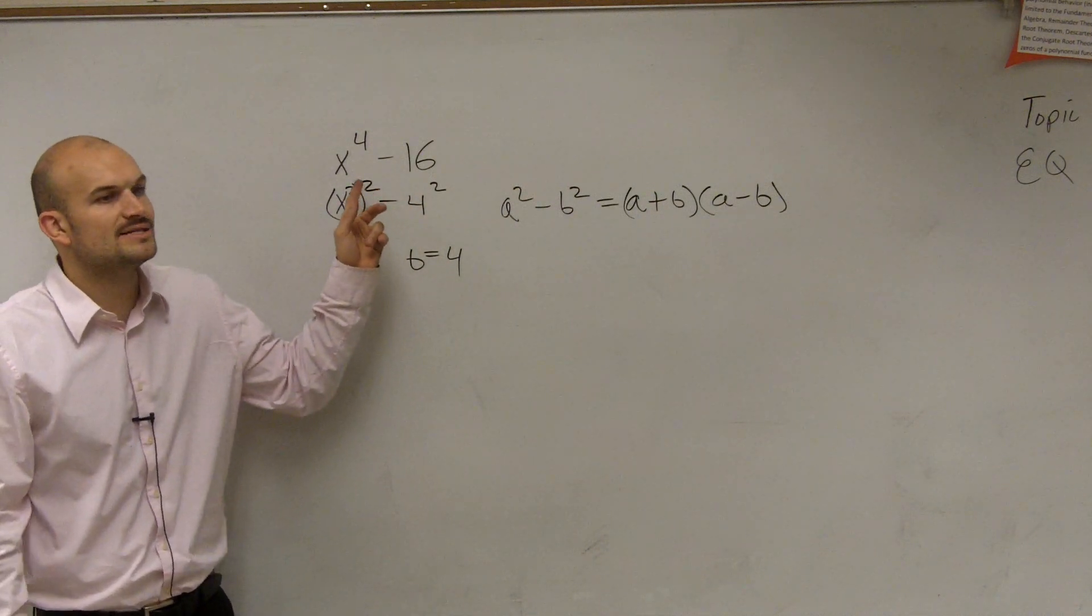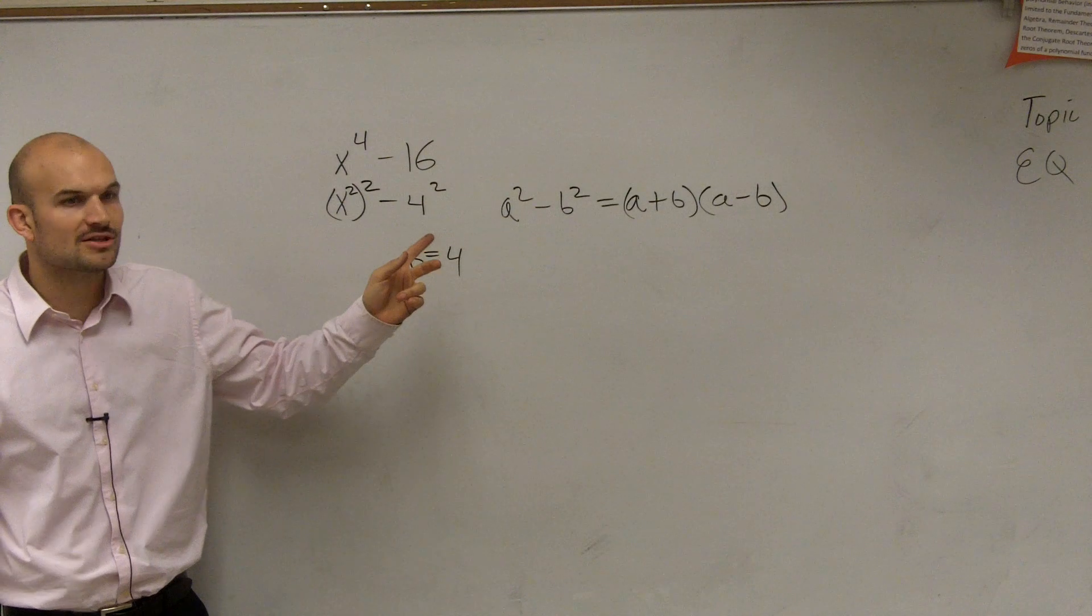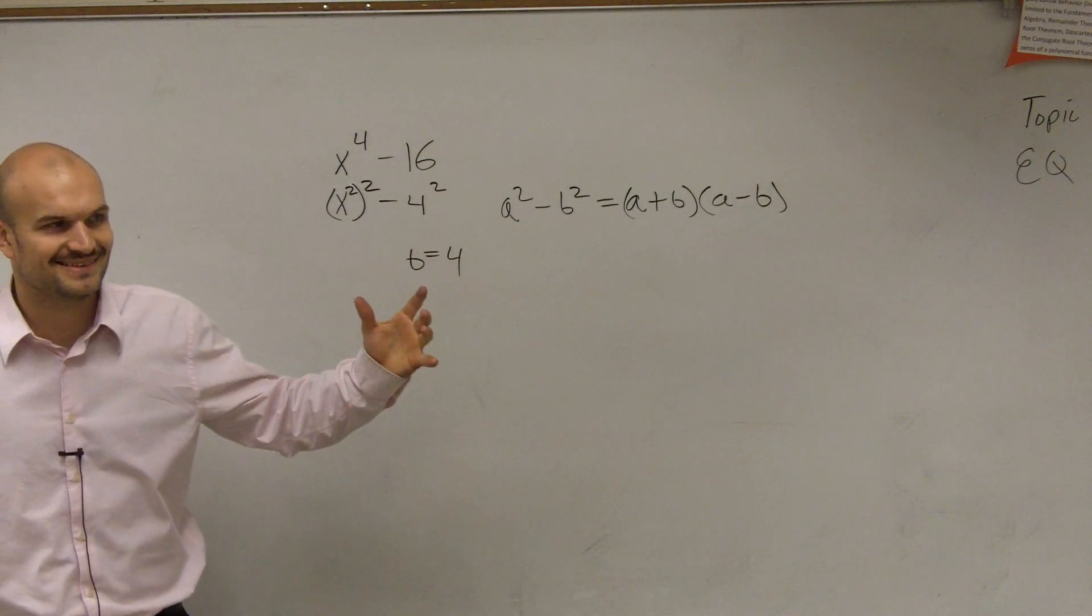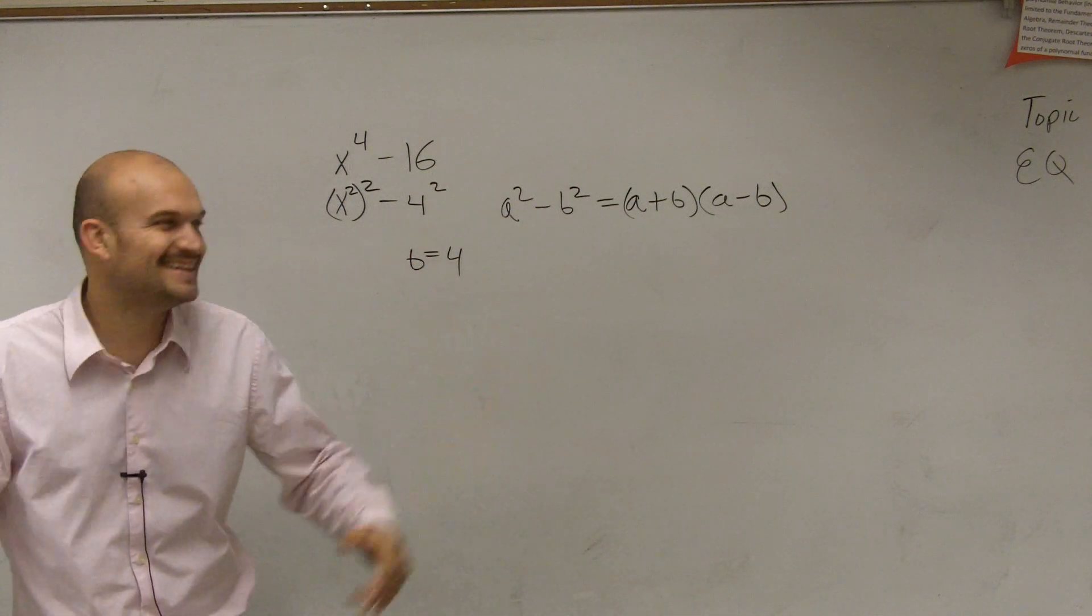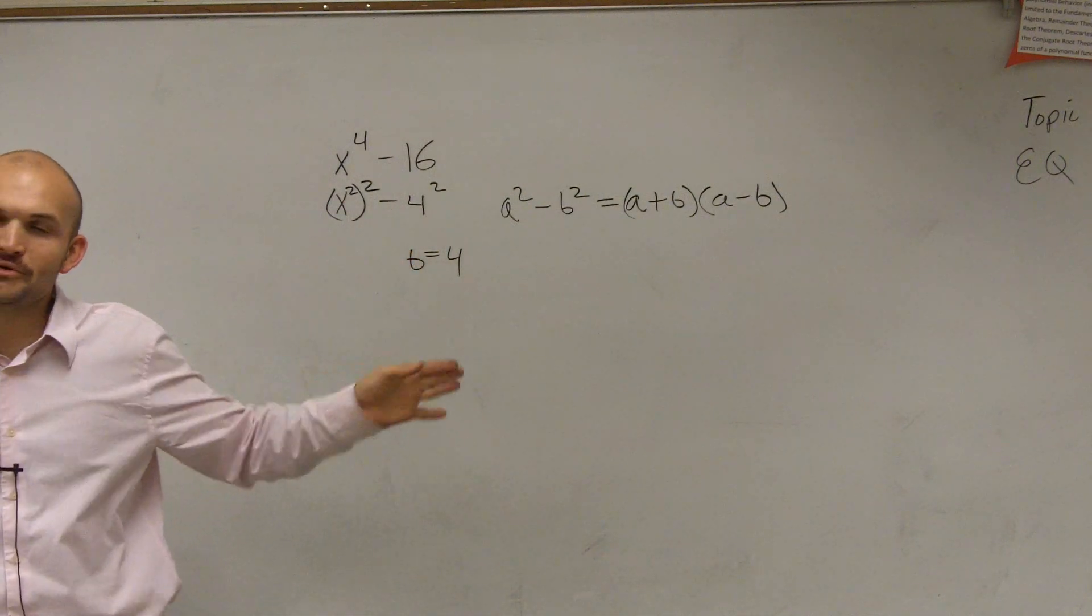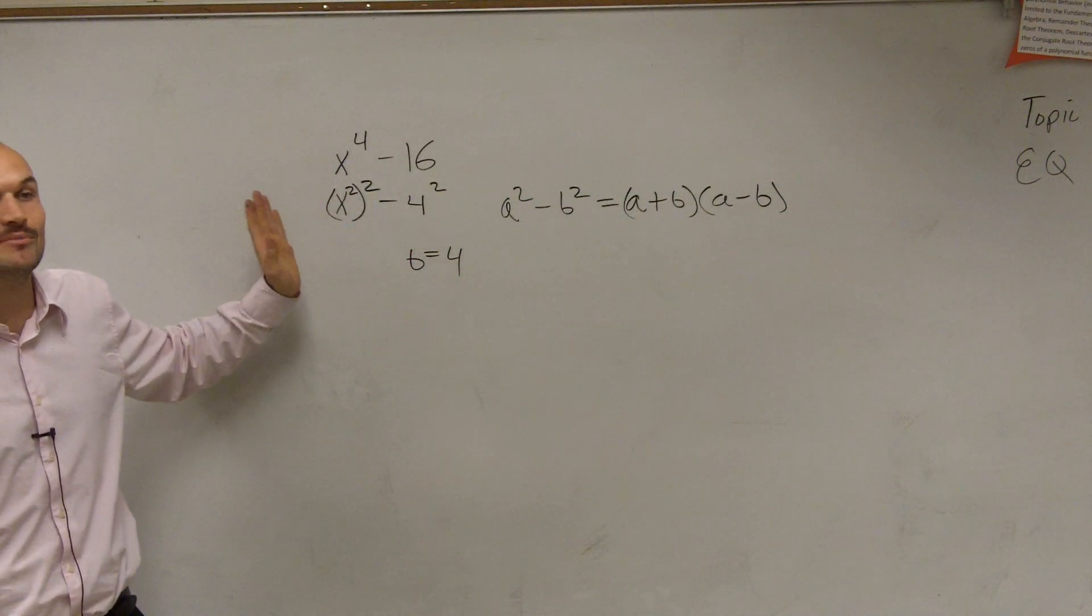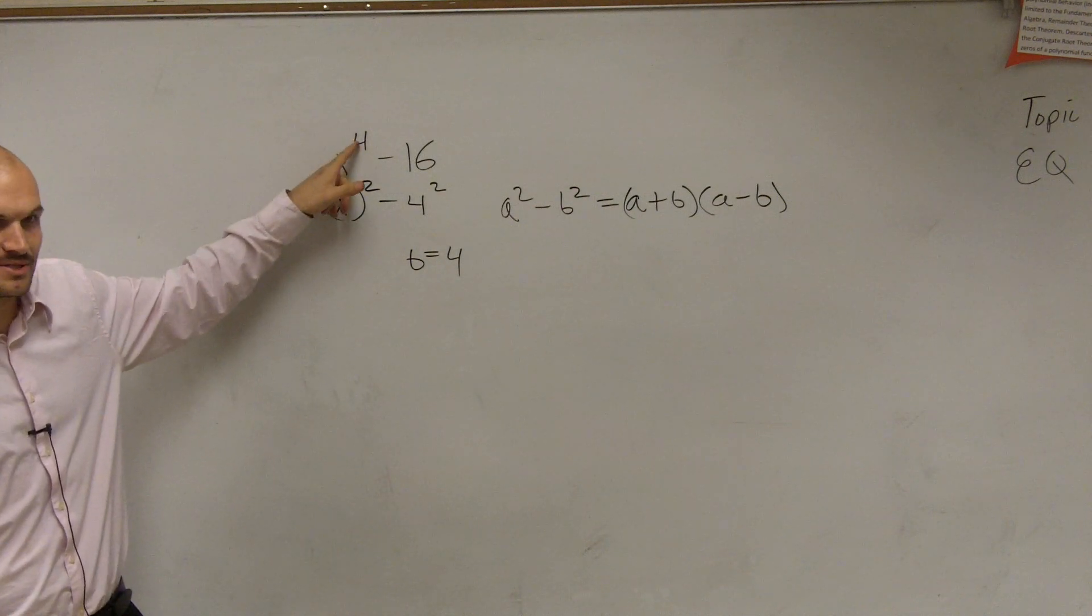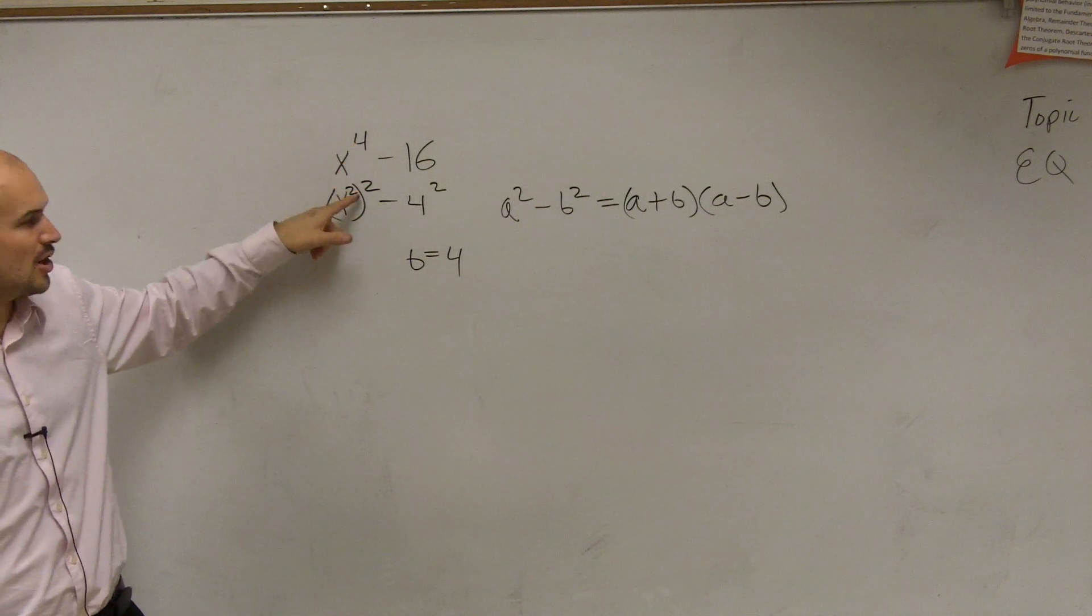Because remember, when you raise an exponent to an exponent, do you add or multiply? You multiply. So when you raise a power to a power, you multiply. That's why that becomes to the fourth. It's not because you're adding them, it's because you're multiplying them.